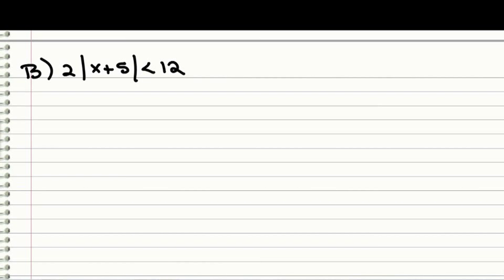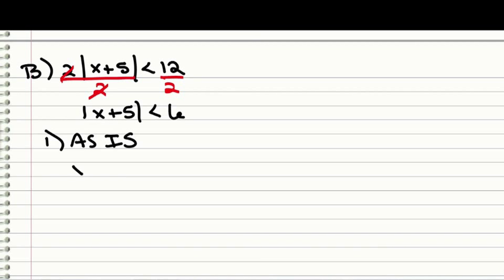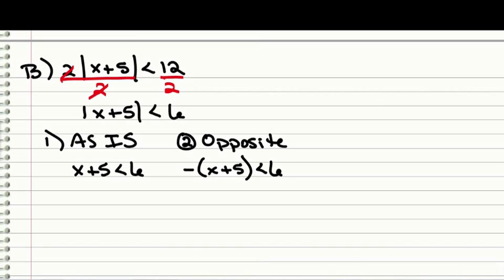Okay, on b, same thing. We still have the absolute value, but we need to get it by itself first, before we do the as is and the opposite. So let's go ahead and divide both sides by 2. So these guys divide out, and we're left with the absolute value of x plus 5 is less than 6. So we've got the as is, which would be the x plus 5, less than 6. And we also have the opposite. So we take the opposite of the inside, everybody on the inside is less than 6.